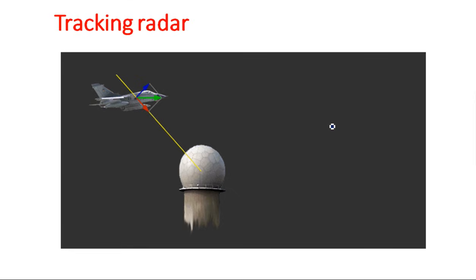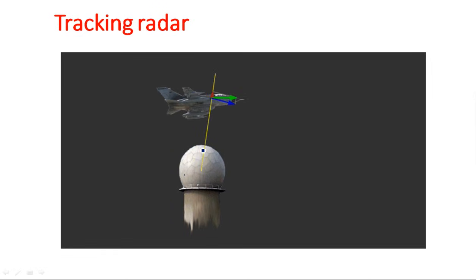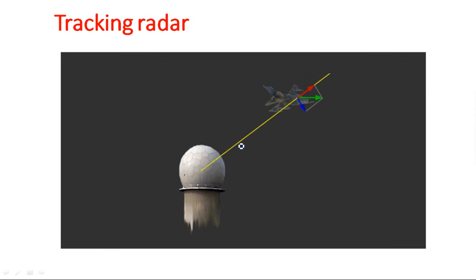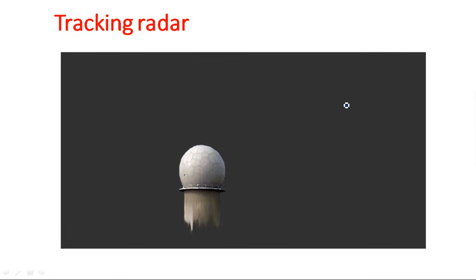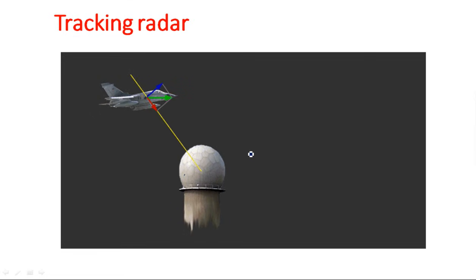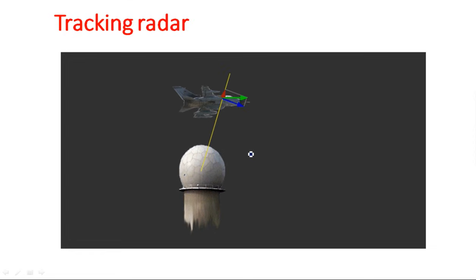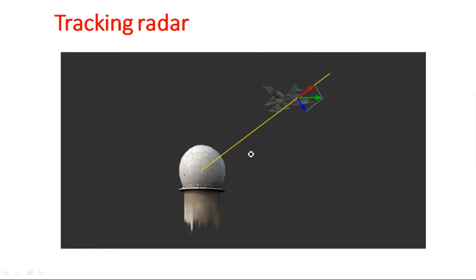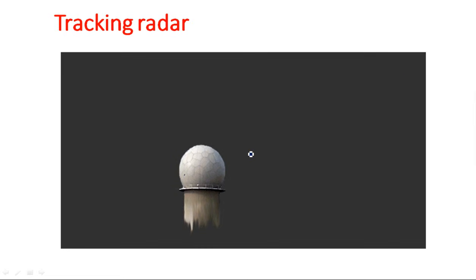Observe this video — you can understand what a tracking radar will do. This is the radar system; the globe here shows a radar system with a radome to protect the radar antenna inside. The yellow color line is the signal connected from the radar system to the target. Initially the target is identified at a particular position, and once identified, our next step is to track it. The antenna must be rotated in the same direction in which the target is moving — that type of radar system is known as tracking radar.